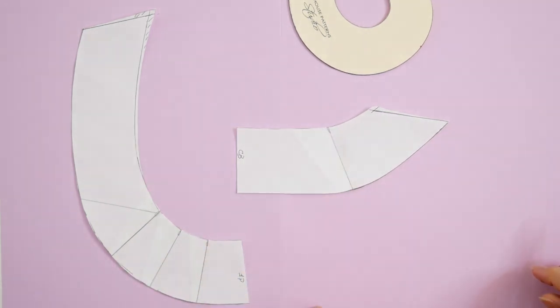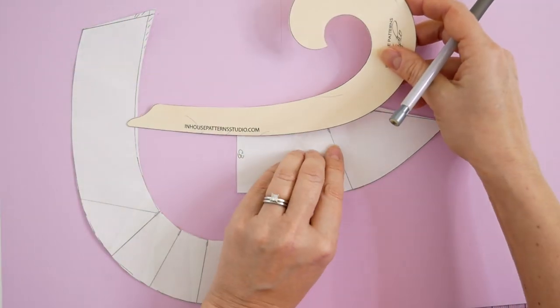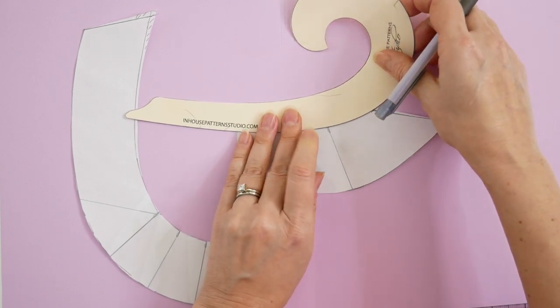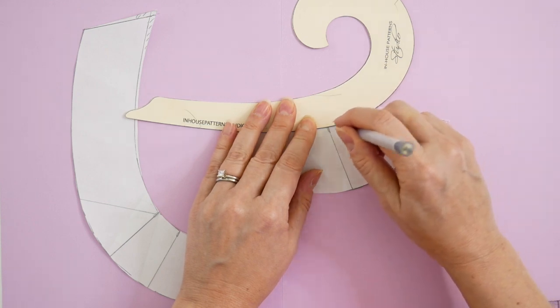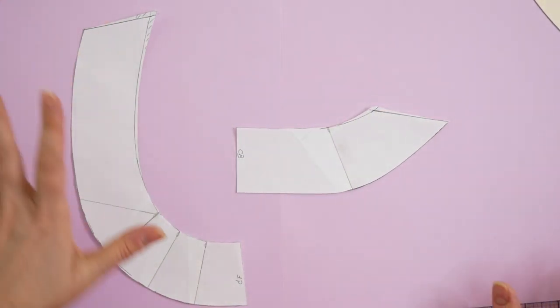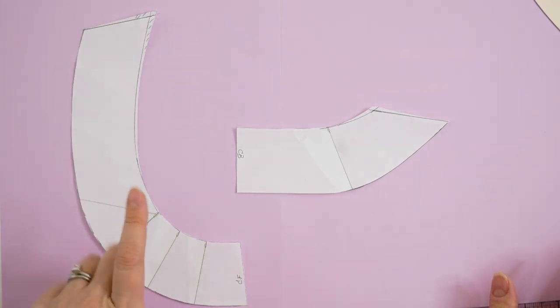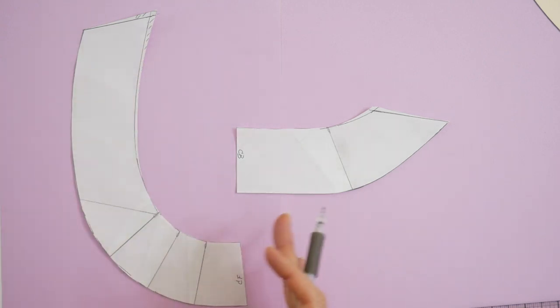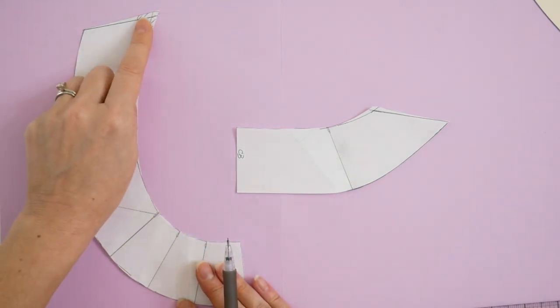I'm going to use my curve here and just shave off that little bit of that edge. Now you're going to notice that this also makes the neckline facing slightly larger in terms of its circumference around the neckline, but we compensate for that by reducing the length on this side.